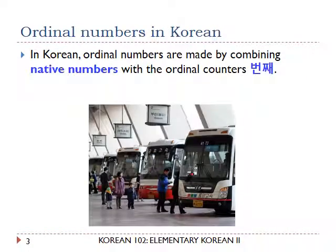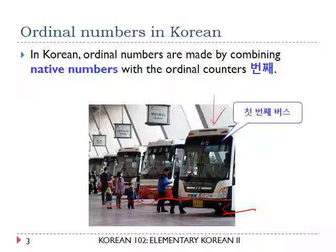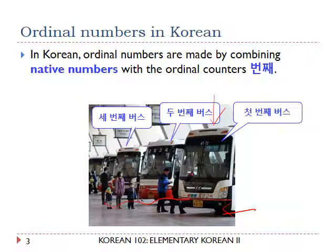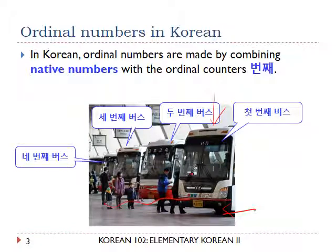Let us look at this example. If you want to say the order of these buses from the left side, then the first bus in Korean is 첫 번째 버스, the second bus is 두 번째 버스, 세 번째 버스, 네 번째 버스, and so forth.